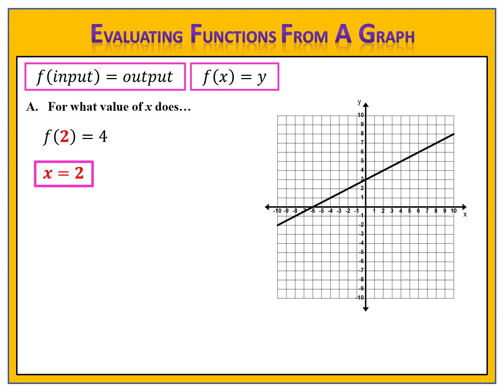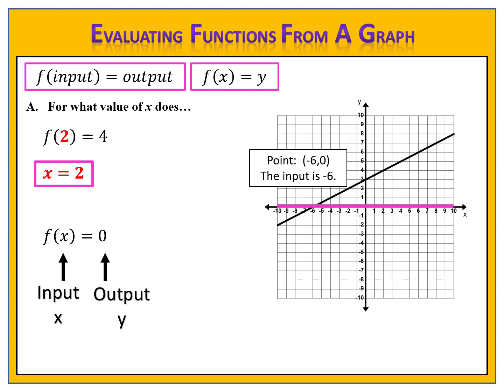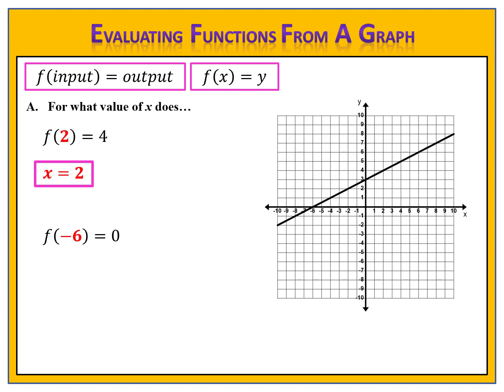Let's look at another exercise: f of x equals 0. F of input equals output — the input is x and the output is 0. We know the output and want to find the input. The output is 0, so we draw a horizontal line through the y-axis at 0 and find where the graph intersects — at the point (−6, 0). So when the input is negative 6, the output is 0, meaning f of negative 6 equals 0 and x equals negative 6.